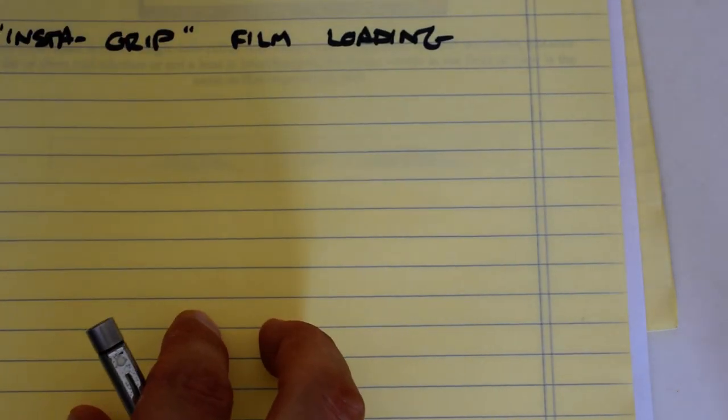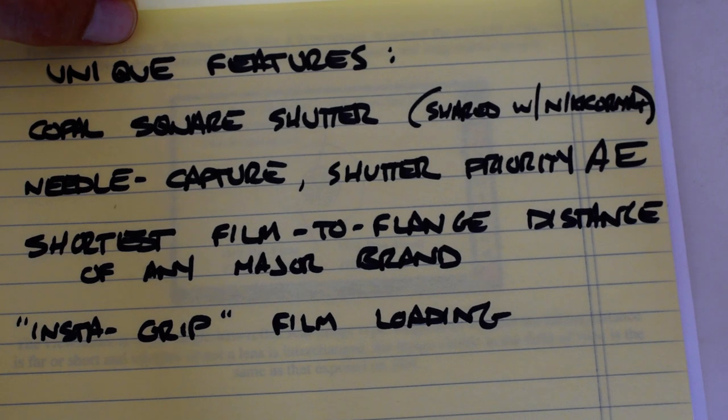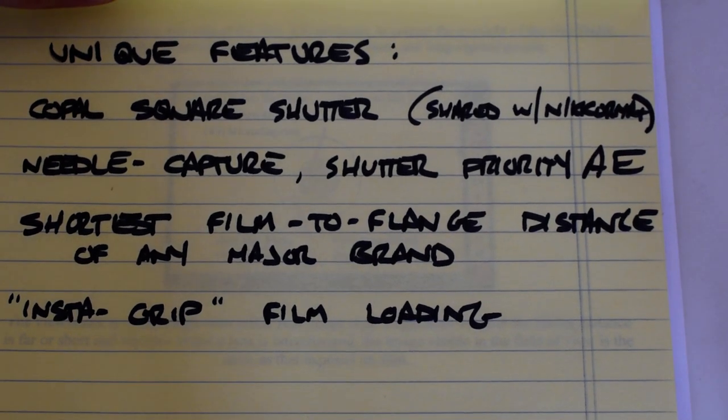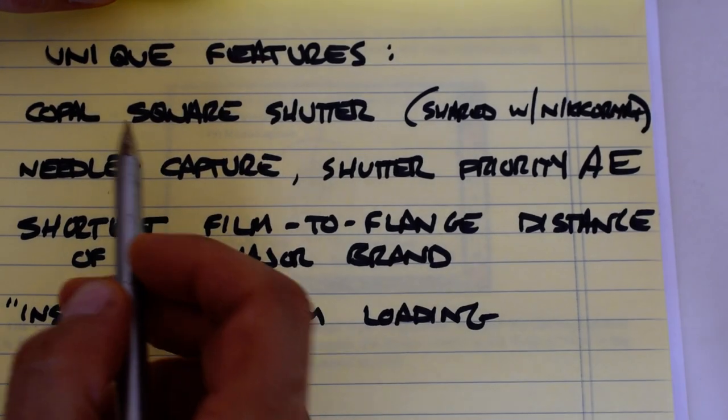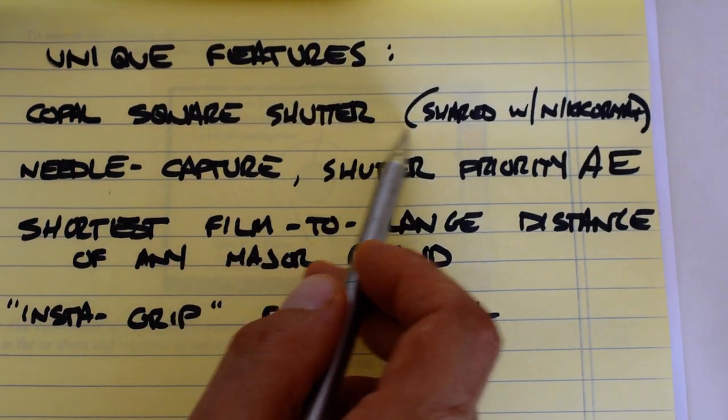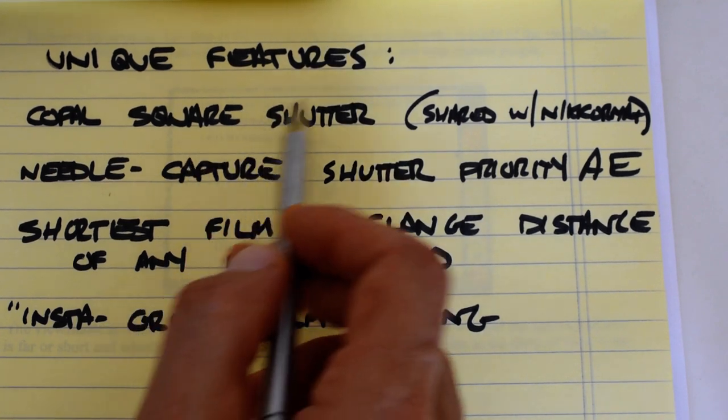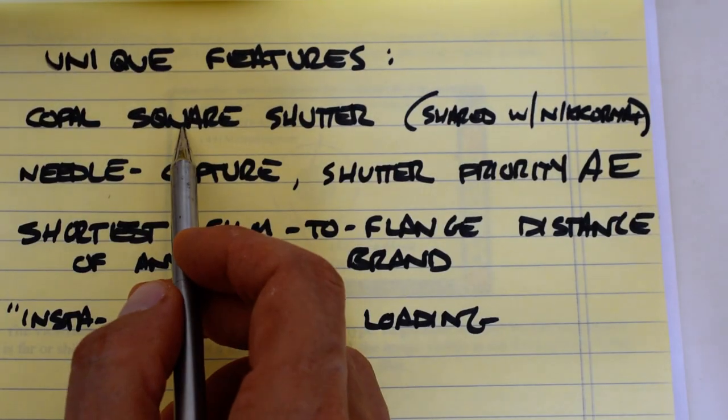So what are the unique features of the Autoreflex T2? What differentiates it from the other built-like-a-tank cameras which I mentioned? First and foremost, it uses a Copal square shutter that is shared with Nycromat, so it's not completely unique to the Autoreflex. It's unique to the Autoreflex within this grouping, and the Nycromat.